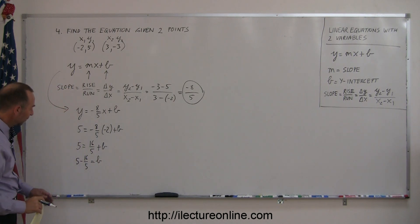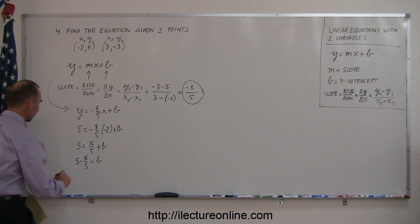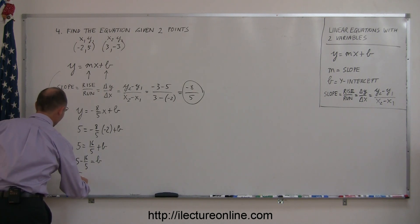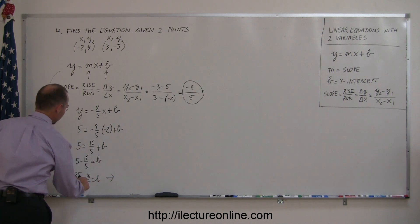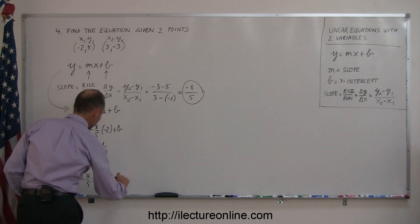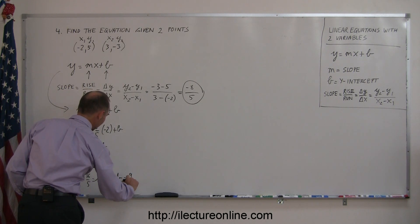To subtract these, I need to write this over a common denominator of 5, so this becomes 25/5 - 16/5 = b. Or, 25 minus 16 is 9, so b = 9/5.